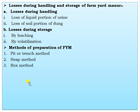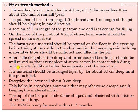Losses during handling and storage of FYM include: during handling — loss of the liquid portion of urine and loss of the solid portion of dung; during storage — losses by leaching and volatilization. The different methods of preparation of FYM are the pit or trench method, heap method, and box method.